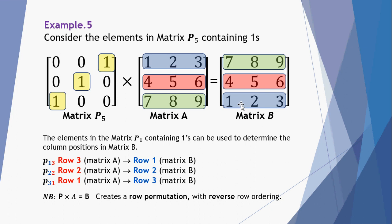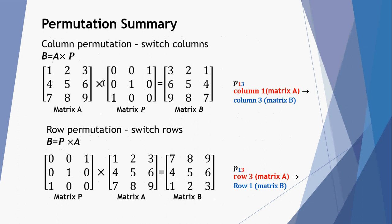Let's summarise. Column permutations involve a matrix multiplied by a permutation on the right. Row permutations involve the permutation matrix multiplied by matrix A on the left. For column permutations, we read the element references from left to right — column 1 from matrix A becomes column 3 in matrix B. For row permutations, we read the elements from right to left — row 3 of matrix A becomes row 1 of matrix B. I hope this has clarified permutation matrices, and that you can practice and master this skill. Thanks for watching.